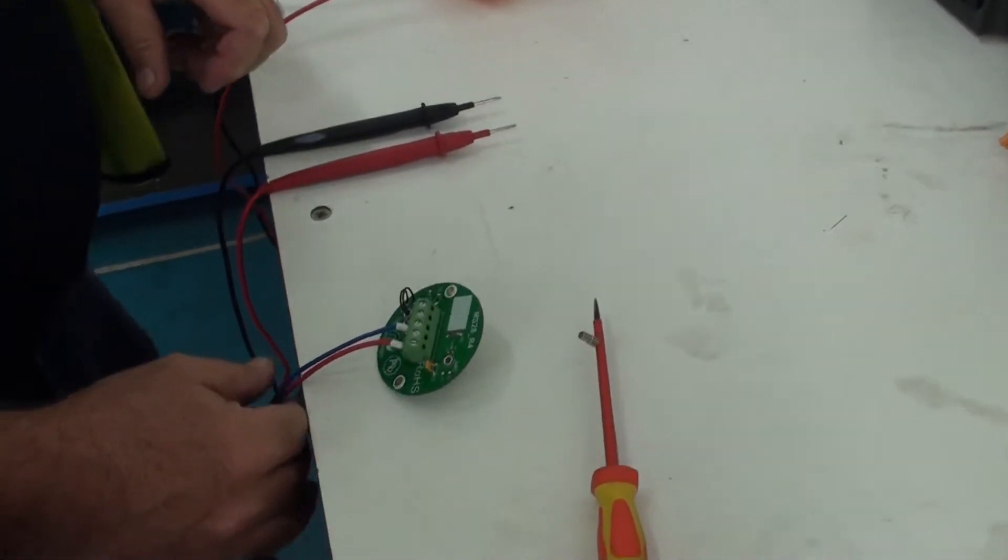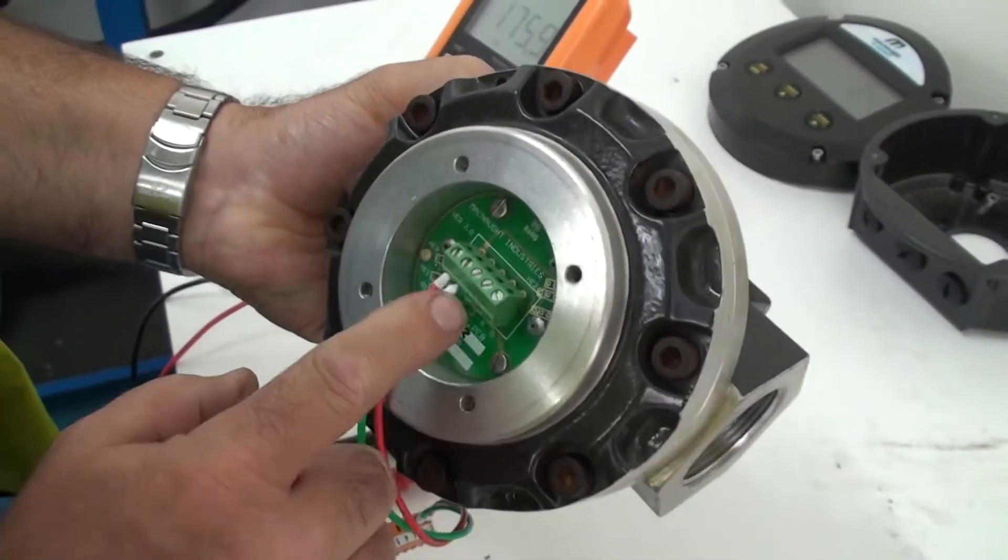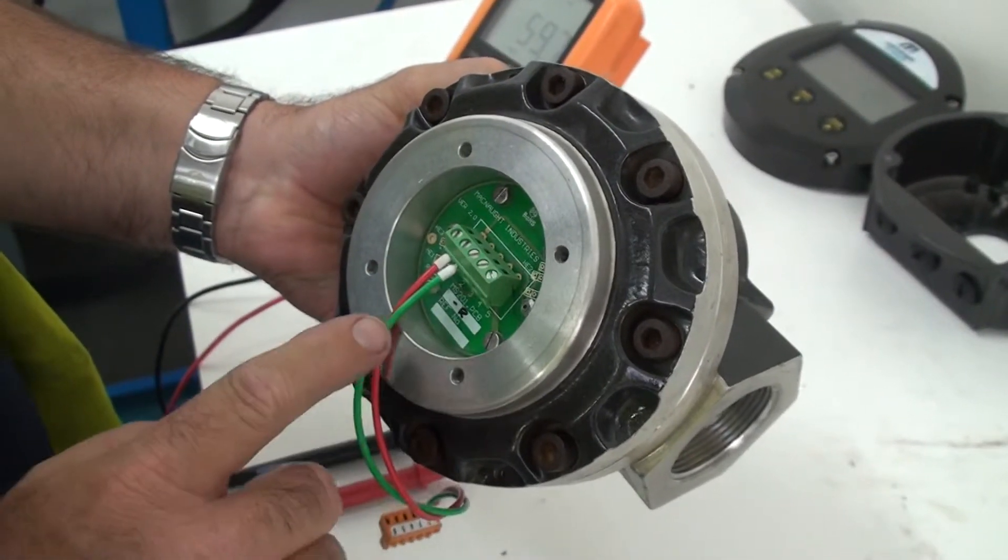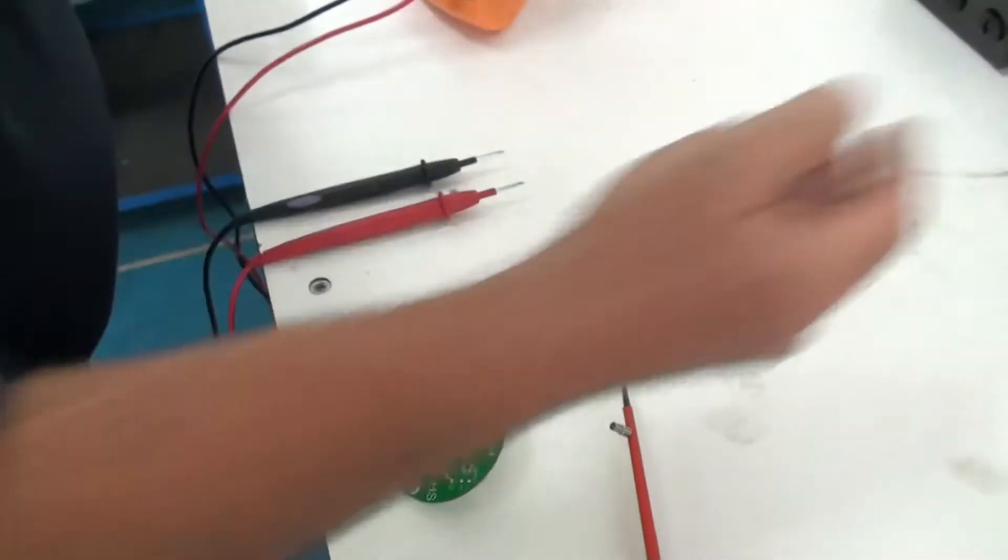I have the pulse board out of the flow meter and as you can see here, this shows me the pulse board inside the flow meter. The test can either be done inside the flow meter or out, but I'll show you how to do it in the out position.